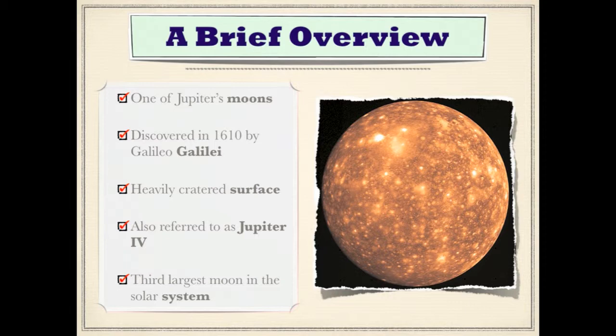It is also commonly referred to as Jupiter 4, or Jupiter IV using Roman numerals, and is the third largest moon in the solar system. By the way, Galileo Galilei wasn't only an astronomer — he was also a mathematician, physicist, and philosopher.